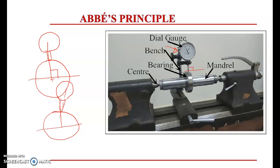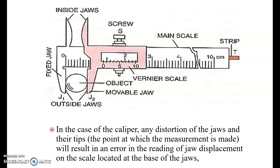This angularity error is what Abbe's principle addresses. Abbe tells us that additional adjustments or an extra framework are required to make the gauge exactly 90 degrees; otherwise there will always be an associated error. There is no formal mathematical proof studied here — we are just discussing the concept behind Abbe's principle.